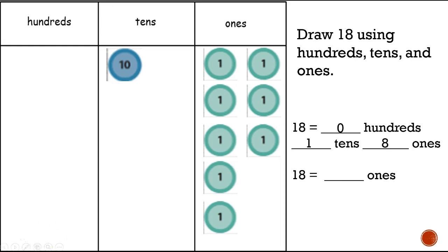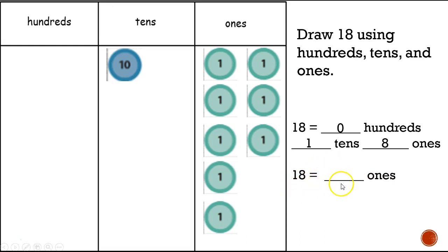This one's tricky — how many ones are there in eighteen? Eighteen equals how many ones? We don't have the tens, so you just write how many ones. Eighteen equals eighteen ones.